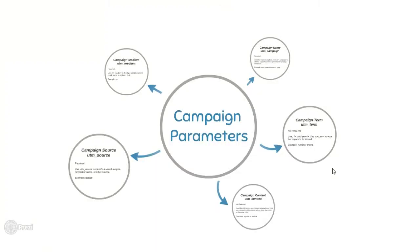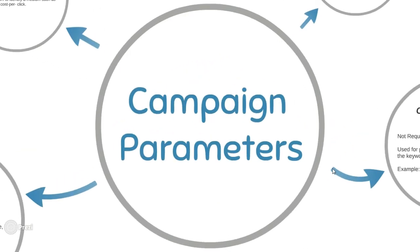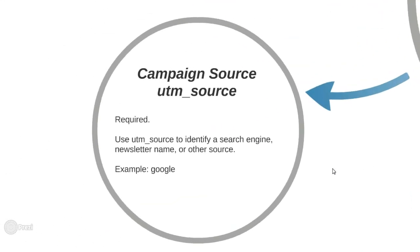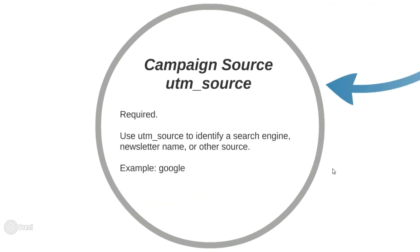Let's talk about what you can track. These are the five campaign parameters. The first is campaign source — source is the website from which the traffic is coming. Examples include Facebook, YouTube, Pinterest, Your Story, Quora, or any website you want to track. In case of an email campaign, source could be the name of your newsletter, like 'December newsletter' or 'spring sales.'